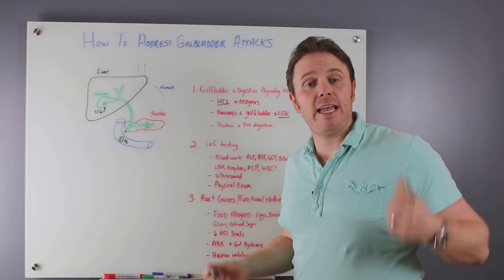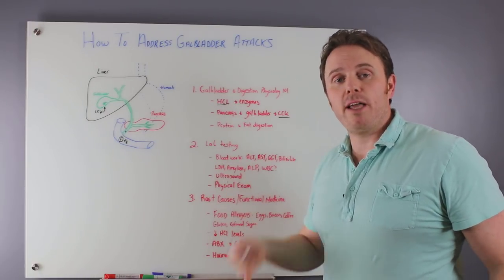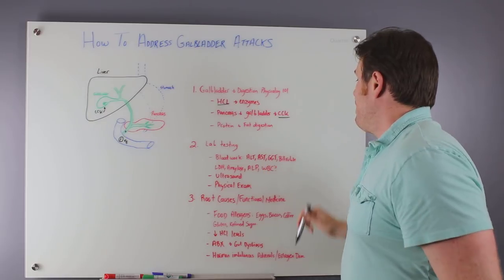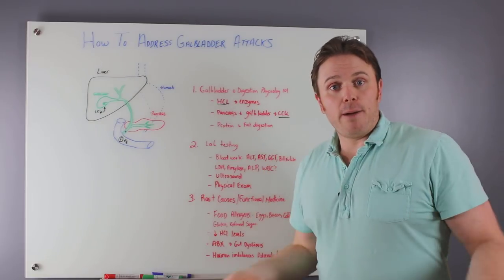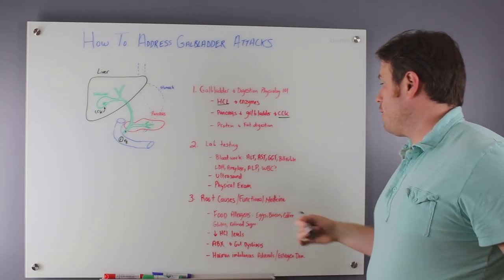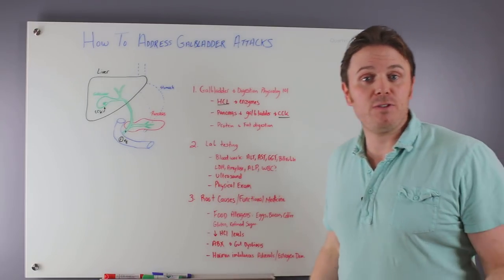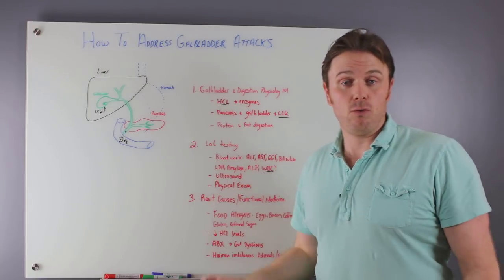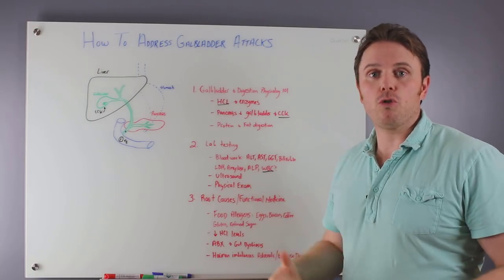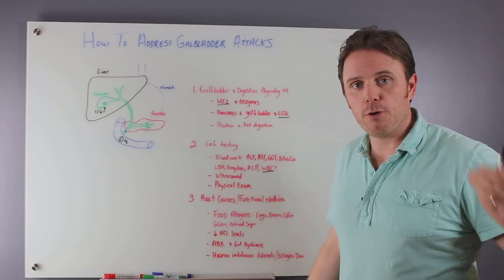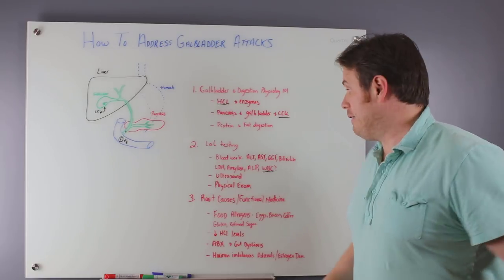So blood work. We may see elevated liver enzymes, ALT, AST, we may see GGT going up. We may see elevated bilirubin, which is a breakdown product of red blood cells that go to the liver and gallbladder, LDH, amylase, ALP, alkaline phosphatase, and increased WBCs if there's an infection. These are all immune markers or enzyme markers for the gallbladder or the pancreas and or the liver.